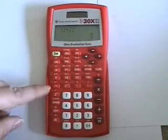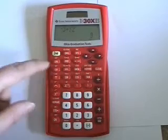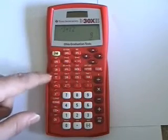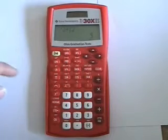You'll notice that there's different functions here. All the yellow markings, you have to use the second button with these yellow markings, just like the inverse on the old OGT calculator.